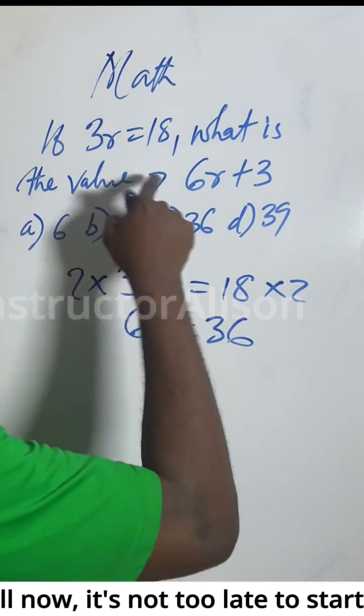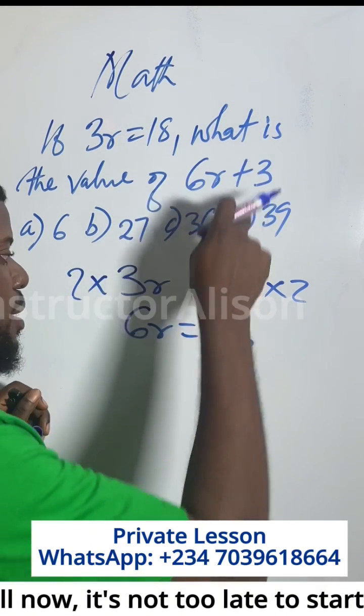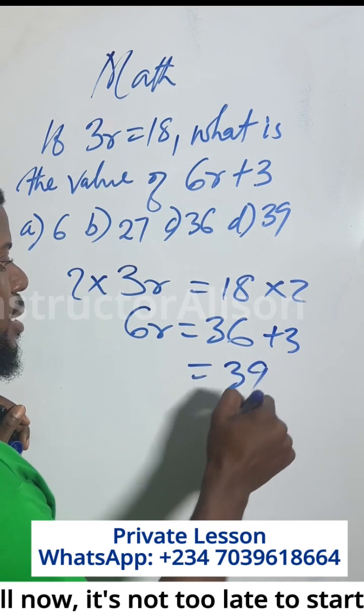When the question asks for the value of 6x plus 3, I already have 6x. So 6x plus 3 means I will add this answer plus 3, and that gives me 39.